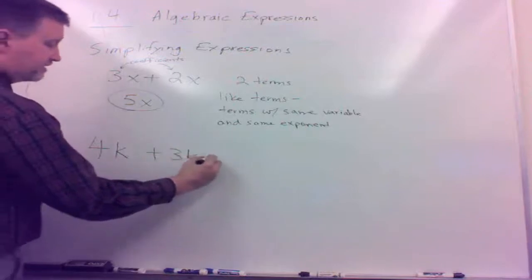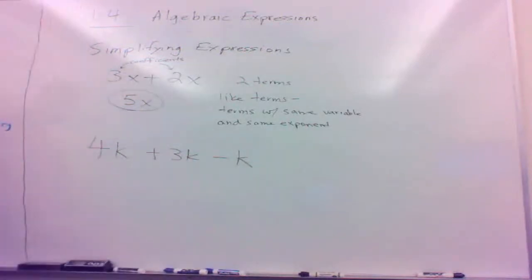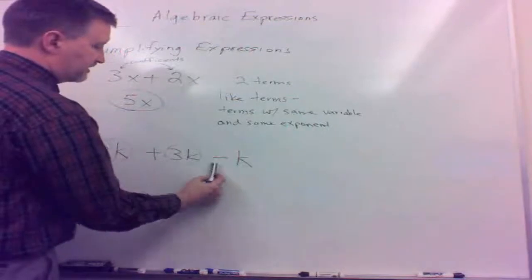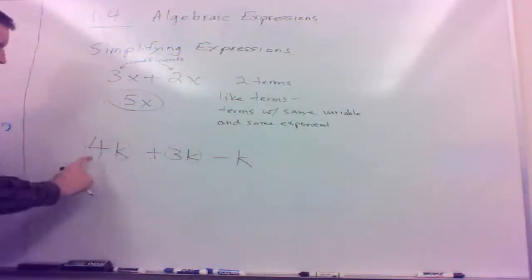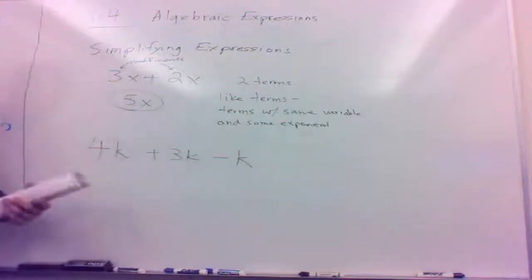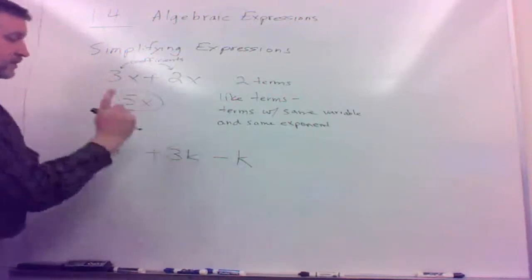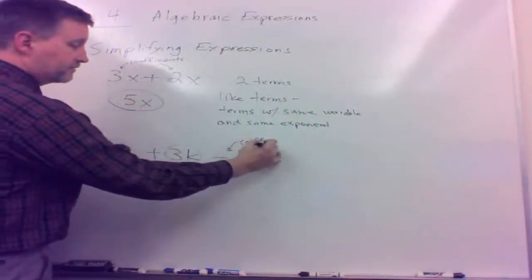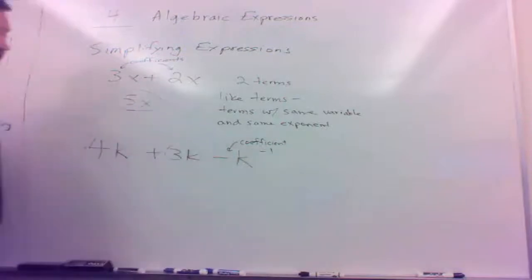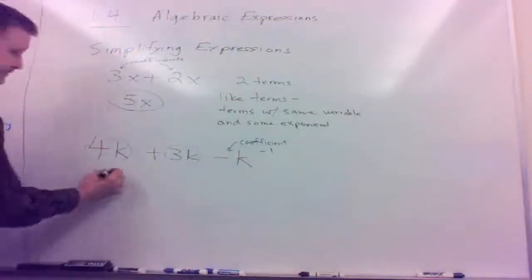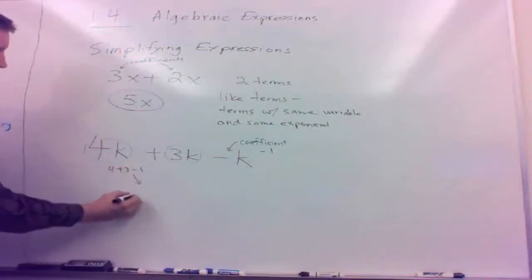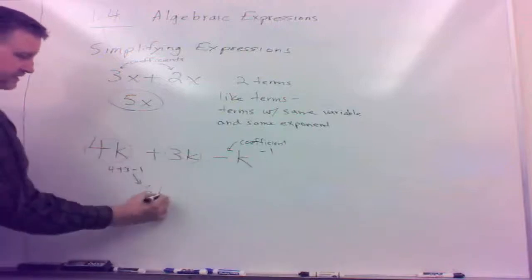It works the same for any variable. Consider 4k plus 3k minus k. I have three terms — the 4k term, the 3k term, and the minus k term — but they're all like terms. They all have the same variable and same power, so we combine them. Note that when there's no coefficient showing, it is a 1, so the last term officially has a coefficient of minus 1. Combining: 4 plus 3 minus 1 is 6, and the variable stays the same, giving 6k.